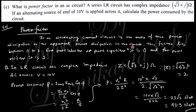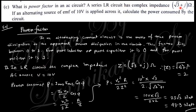Next question: what is power factor in an alternating current circuit? The ratio of true power dissipation to apparent power dissipation in the circuit is known as the power factor. It ranges from 0 to 1. For a pure inductor or pure capacitor the power factor is 0, and for a pure resistor the power factor is 1.